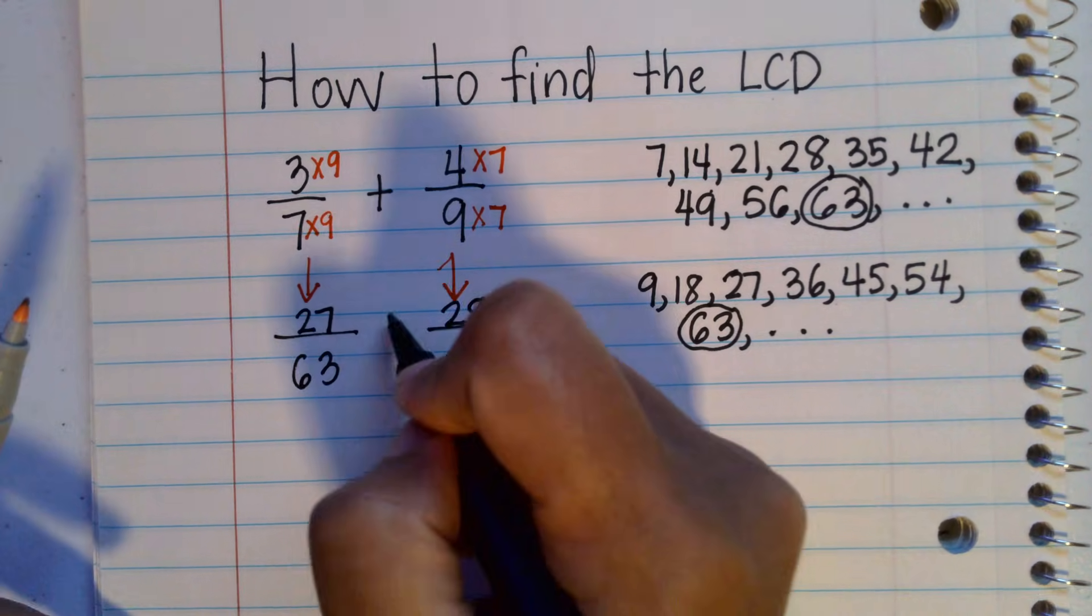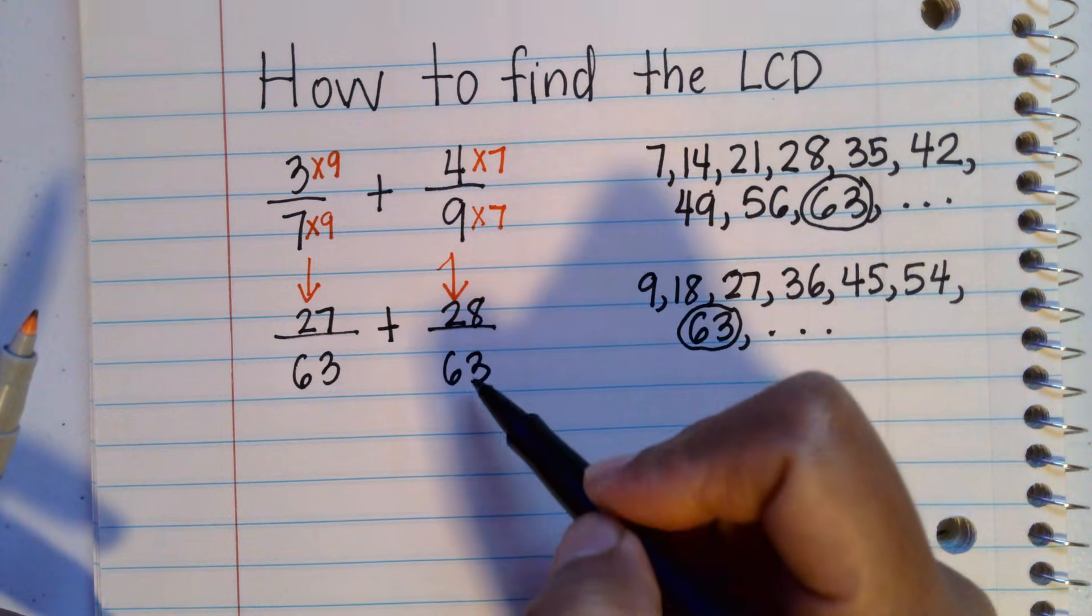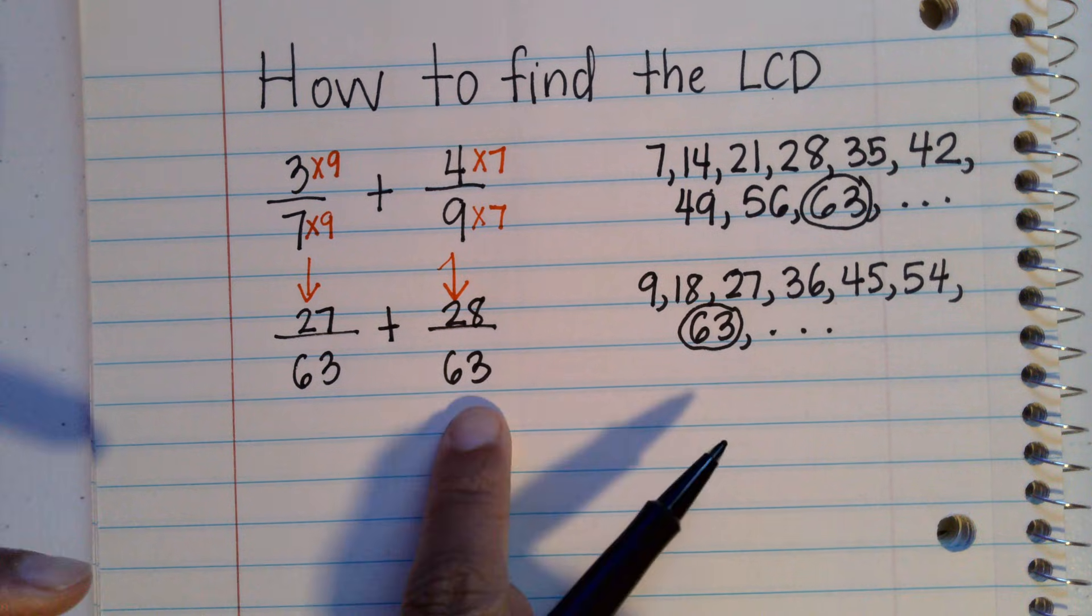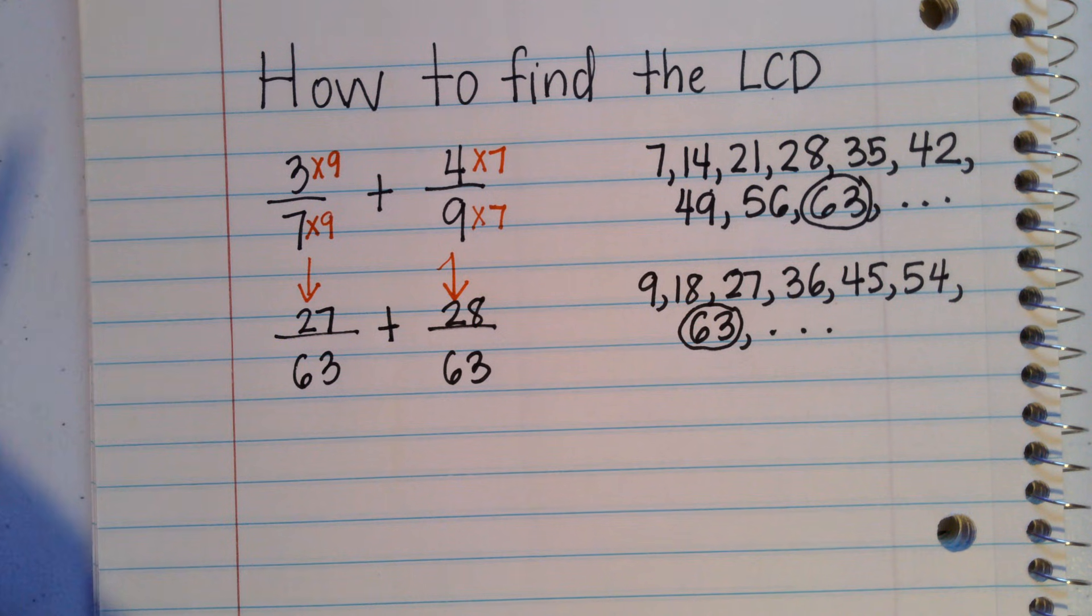So now you have, instead of four ninths, you have 28 over 63. Once the denominators are the same, you can now add the fractions very easily.